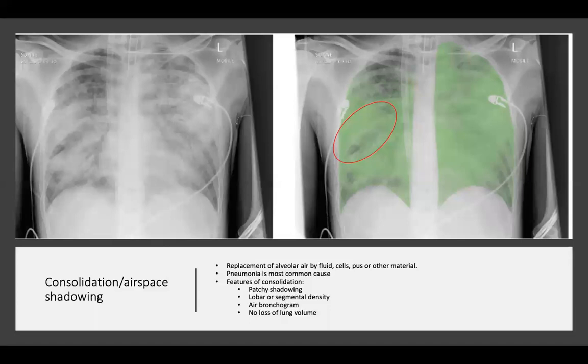This x-ray is an example of consolidation or airspace shadowing. Consolidation is the replacement of alveolar air by fluid, cells, pus, or other material. Pneumonia is the most common cause of consolidation, and it is also sometimes seen in primary TB. Features include patchy shadowing with a non-uniform, not well-demarcated border, lobar or segmental density corresponding anatomically to a lobe or lung segment, and an air bronchogram confirming the density is in the alveoli and not the large airways.